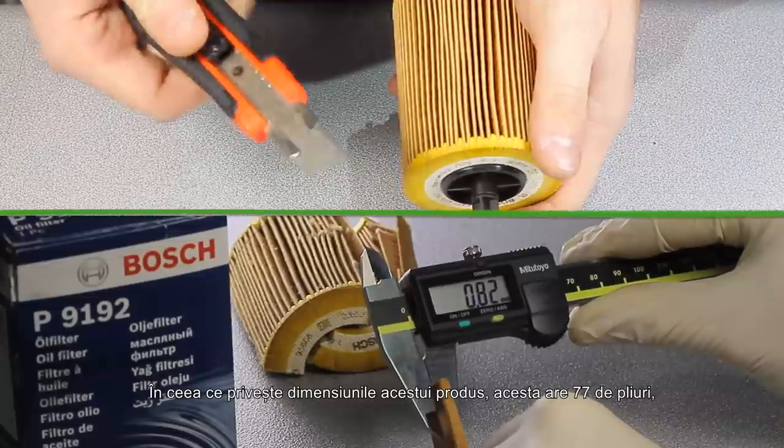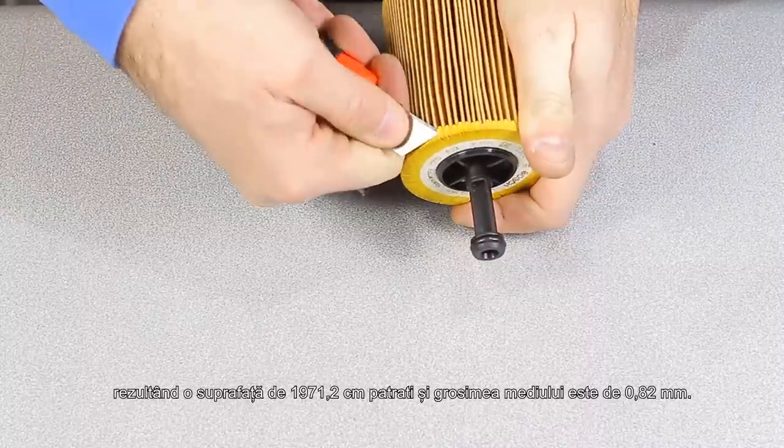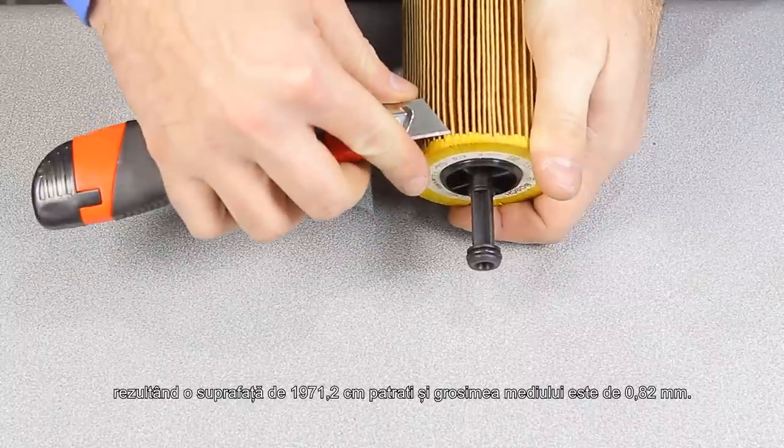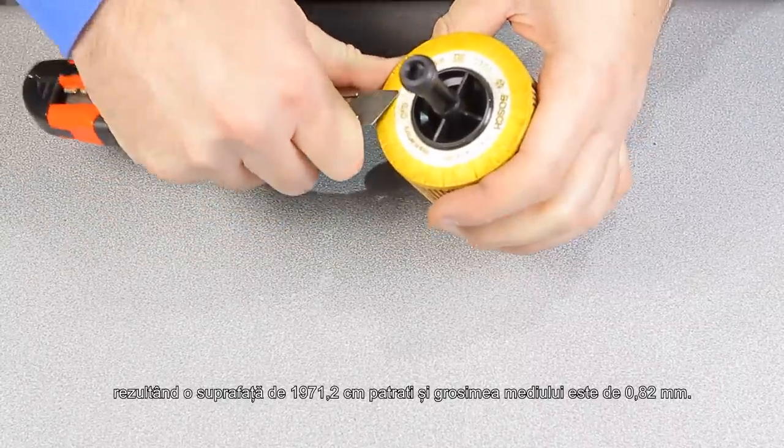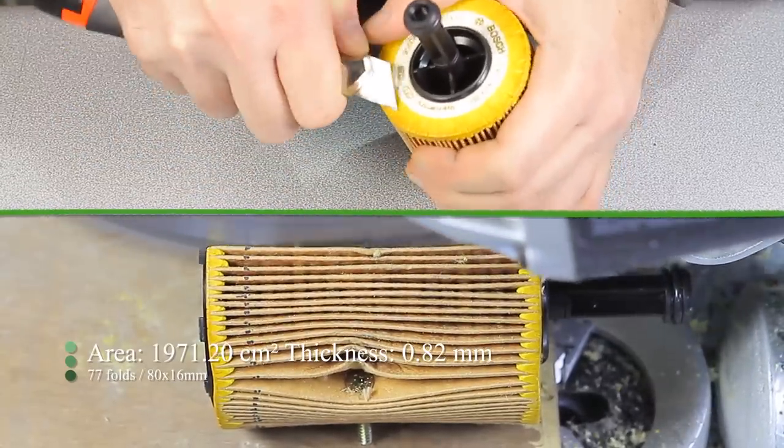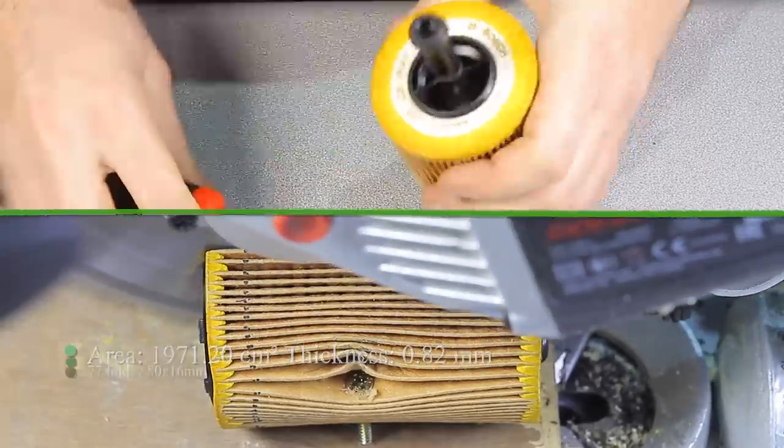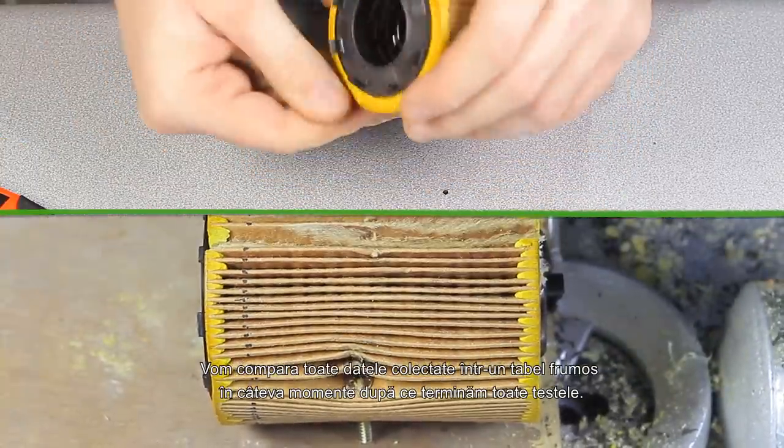Regarding the dimensions of this product, it has 77 folds resulting in a surface area of 1971.2 square centimeters and the media thickness is 0.82 millimeters. We'll compare all the data collected in a very nice table in a few moments after we finish all the tests.